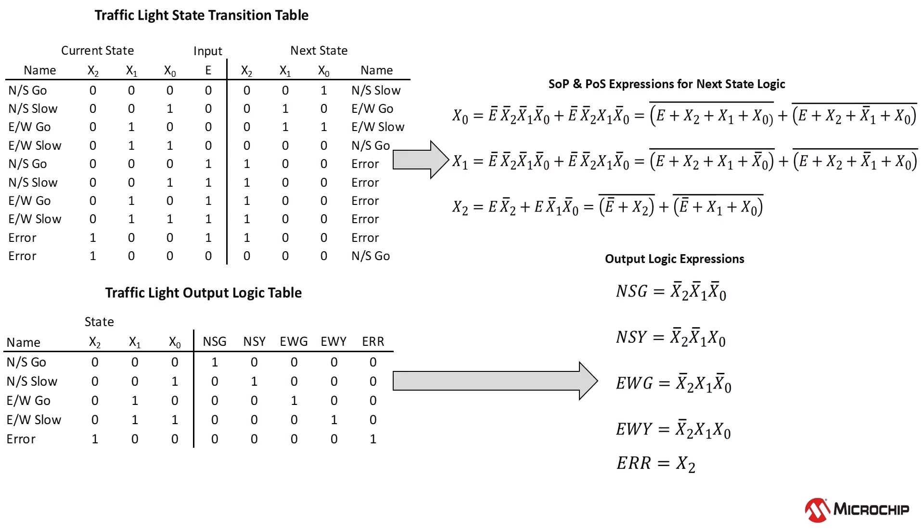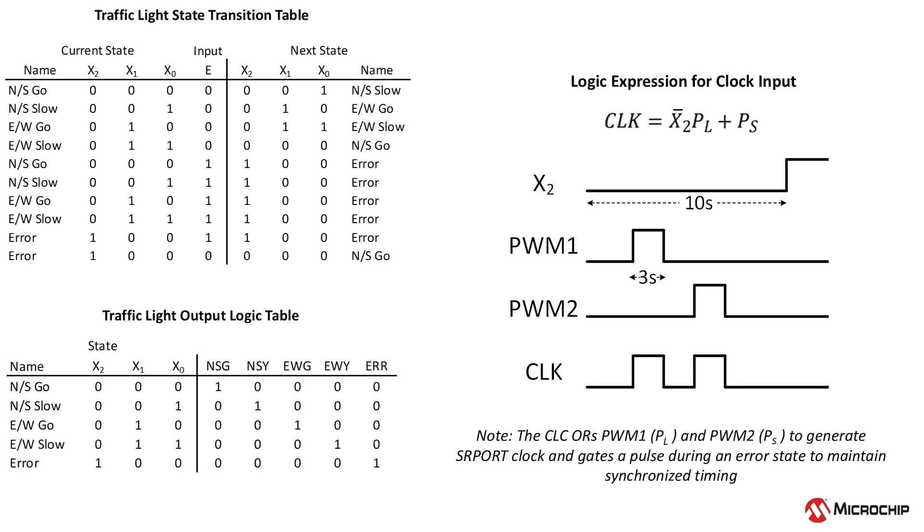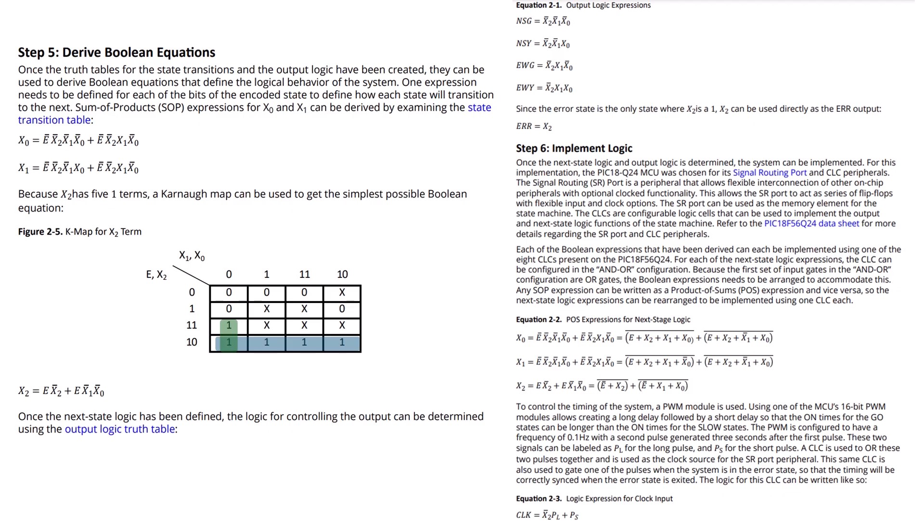Now that we have the Boolean equations created, we need to ensure precise control of state timing. This is where the pulse-width modulated core-independent peripheral comes into play. The PWM generates long and short pulses that regulate timing. These pulses are then combined by the configurable logic cell to create a clock signal for the signal writing port, ensuring accurate state transitions and keeping everything perfectly in sync. For a full breakdown of the Boolean equations, clock logic, and timing details, refer to the code example and application note linked in the description below.